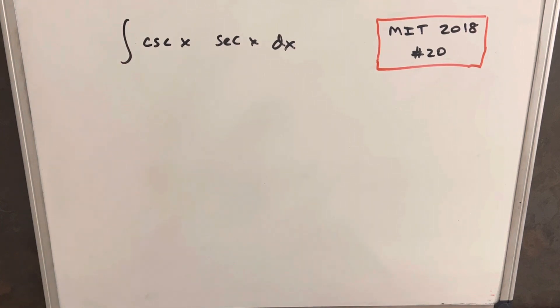Okay, we have here on the board a problem from the MIT Integration Bee 2018. This is problem number 20. Integral of cosecant x times secant x dx.